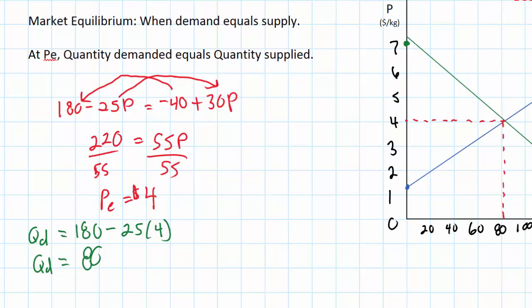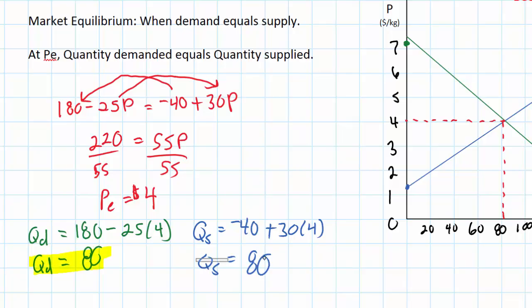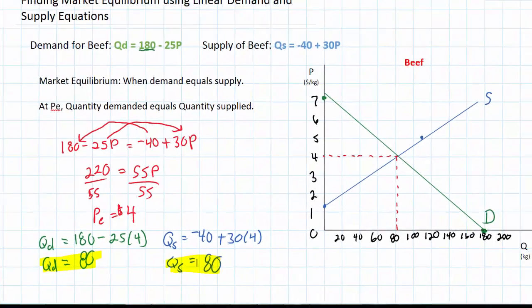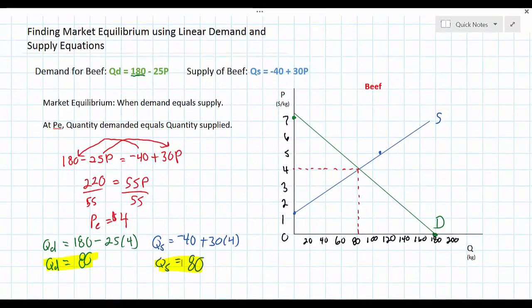Let's check by plugging the price of $4 into our supply equation. Qs equals negative 40 plus 30 times 4. Qs equals 80. Sure enough, the quantity supplied and the quantity demanded at a price of $4 are equal to one another. This confirms that $4 is in fact our equilibrium price and 80 is in fact our equilibrium quantity.